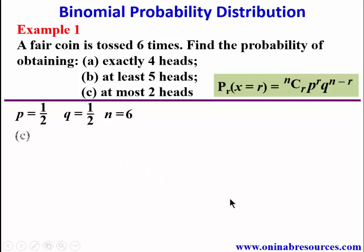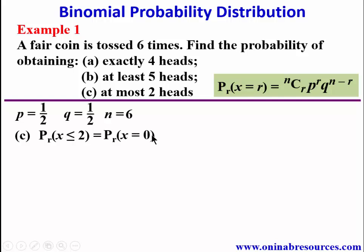For part c, at most two heads means the highest we can get is two heads. So this becomes P(X ≤ 2) = P(X = 0) + P(X = 1) + P(X = 2). We find each of these probabilities and sum them up.